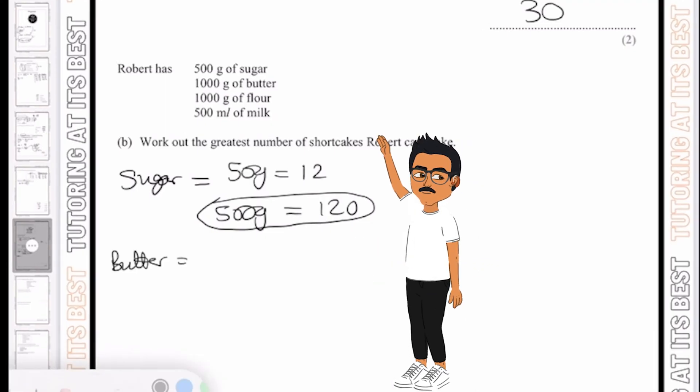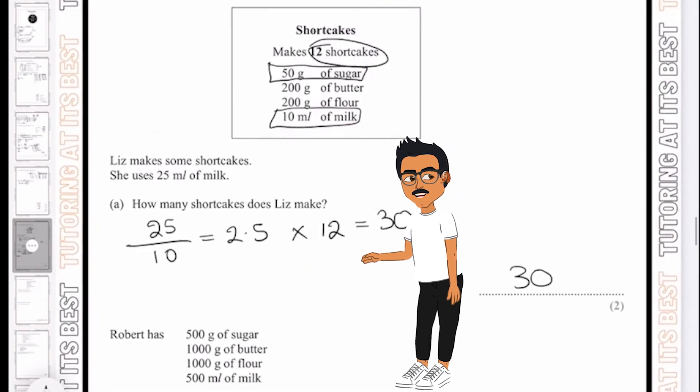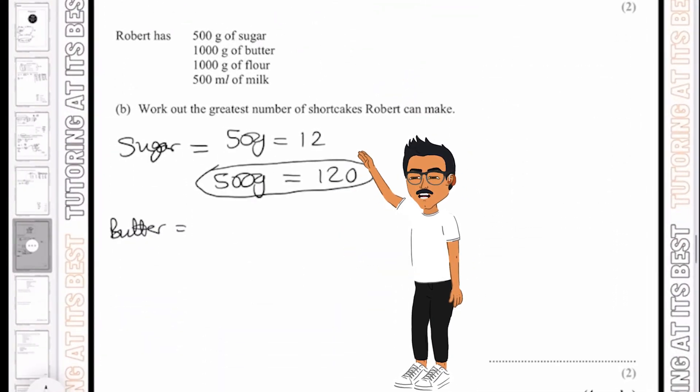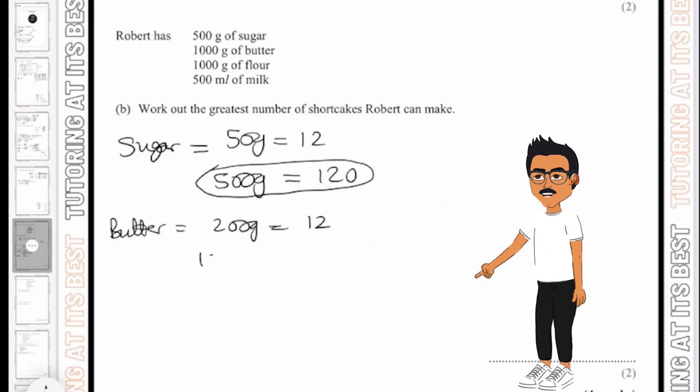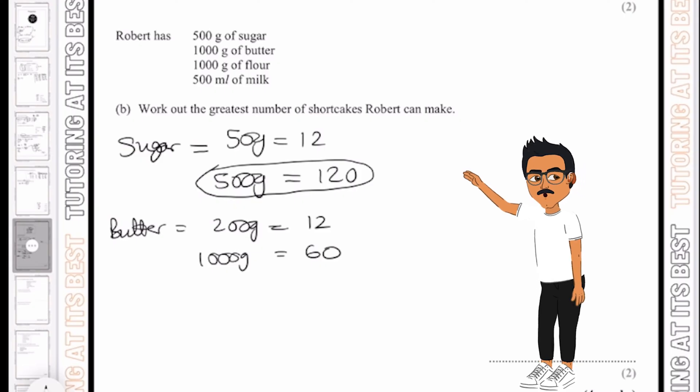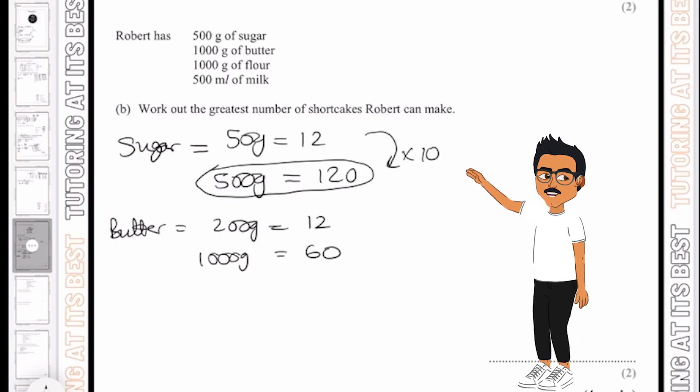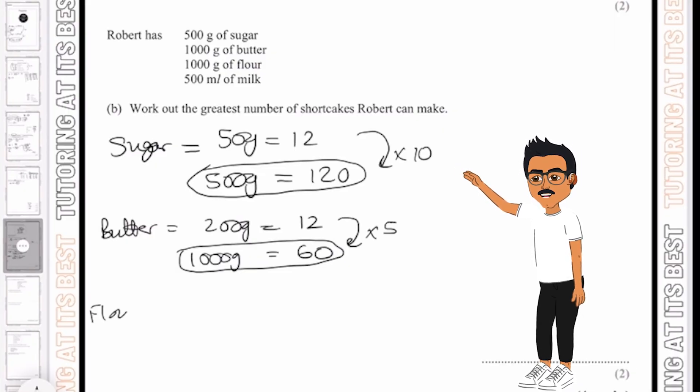Let's then go with our butter. So with butter, we know that it's 200 grams of butter. So 200 grams equals 12 cakes. But if we're getting for 1000, we times both sides by 5, which gives you 1000 grams and 60 shortcakes. So again, we times by 10 and we times by 5.